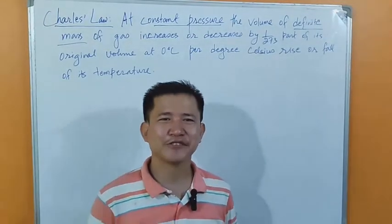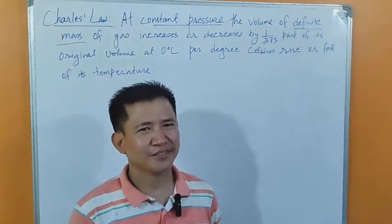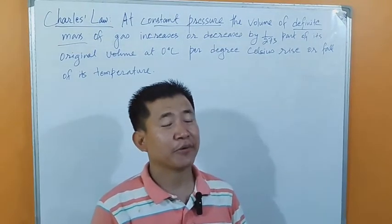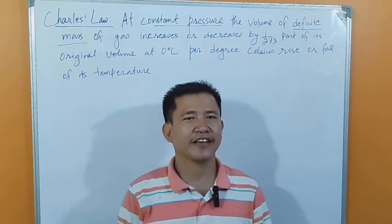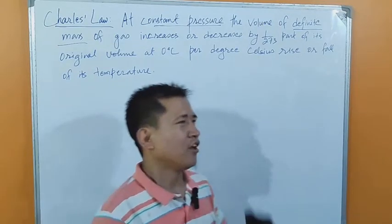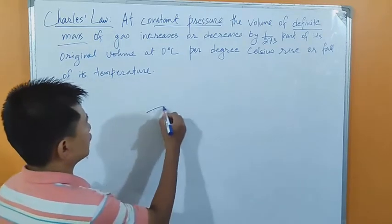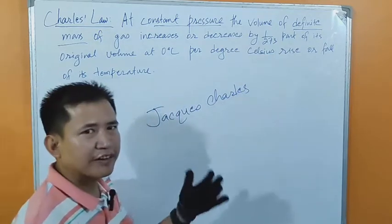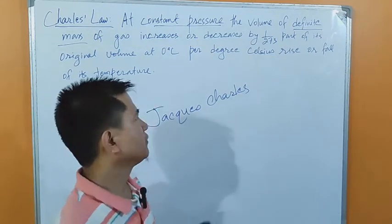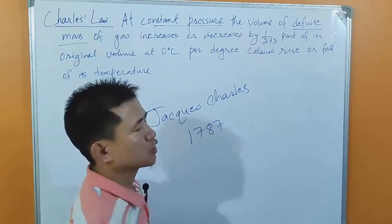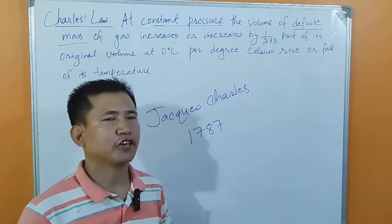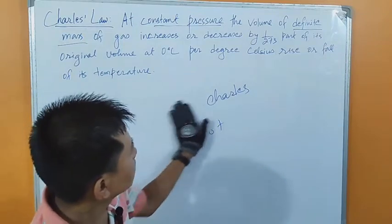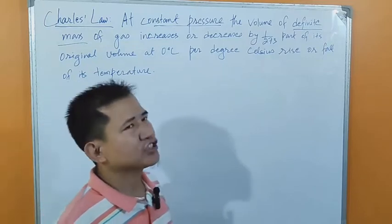Hello students, welcome back to Toma Chang Tutorial. I'm Christian Kulung, and today we are going to discuss Charles Law. We have already discussed Boyle's Law in our previous video — you can find the link below in the description. A very famous scientist named Jacques Charles found out the relation between temperature and volume of a gas in the year 1787, and established his famous gas law called Charles Law.